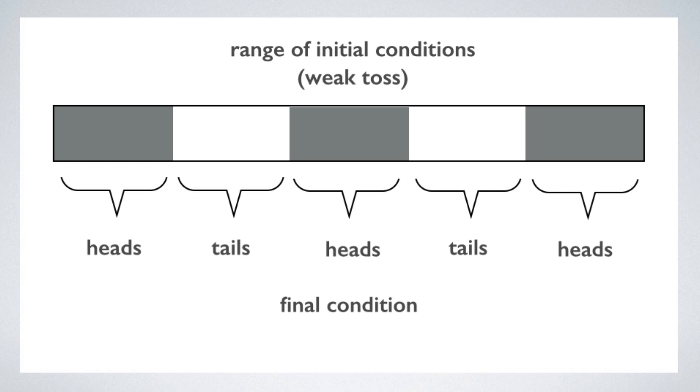However, there's another very interesting theoretical result that has a bearing on this question. When you model the dynamics of a coin toss, you find that as you increase the upward velocity of the coin, or the rate of angular rotation, or both, the difference in the initial conditions that determines whether the coin lands heads or tails gets smaller. What this means is that for a weak toss, there is a wider range of adjacent initial conditions that will result in heads, and a wider range for tails. So the result, heads or tails, is not very sensitive to the initial conditions.